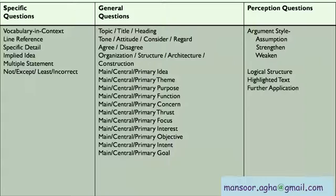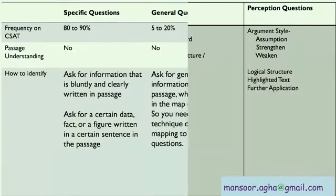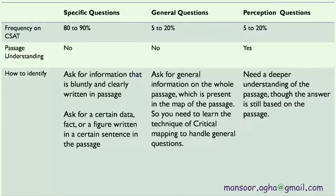General questions can ask you for the topic, title, or heading of the passage; the tone or attitude of the author and his views; and the organization, structure, or architecture of the passage. Most frequently, general questions ask for the main, central, or primary idea, theme, purpose, emphasis, function, concern, thrust, focus, interest, objective, intent, goal, or message of the author or passage — asking for the central message is actually a UPSC favorite. Perception questions can ask for the logical structure or relevance of a sentence or word, and check your argumentation skills by asking for the assumption taken by the author, or what option would strengthen or weaken the author's viewpoint. As you can see from this table, out of the three question types, only perception questions need an understanding of the passage — and luckily, perception questions appear least frequently on the exam.